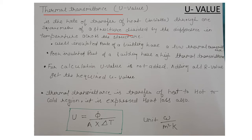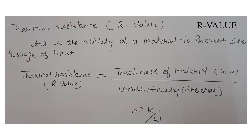U value, thermal transmittance, is a property at the component level — for example, the property of brick or concrete. It is also an expression of heat loss. U value generally indicates heat loss, while K value indicates conductivity within a material. From the formula, we can obtain the U value. Now we will discuss the R value.